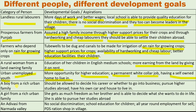A boy from a rich urban family may have goals such as being allowed to decide his own career — whether to go into business or pursue higher education, studies abroad — and wanting his own car and house to live in. As they belong to a rich urban family, their goals align with their living conditions.